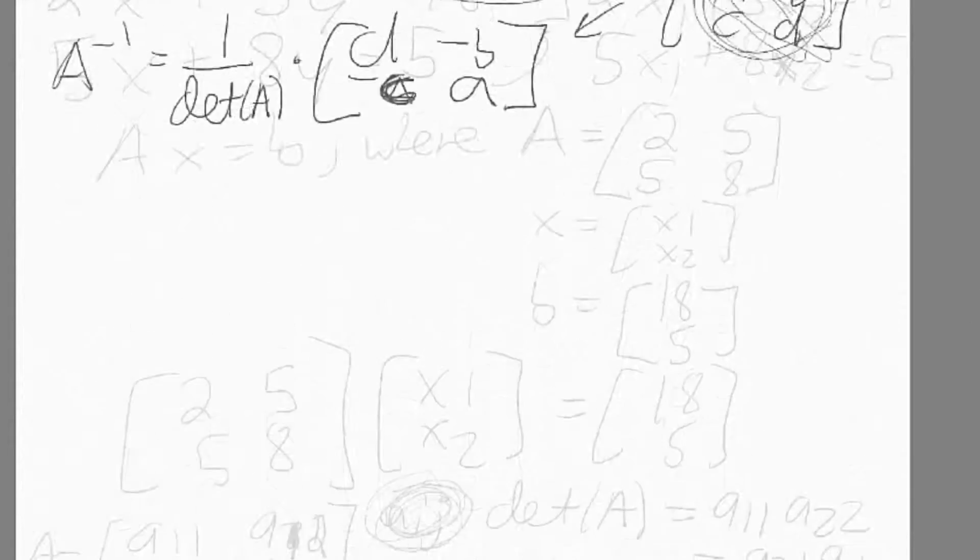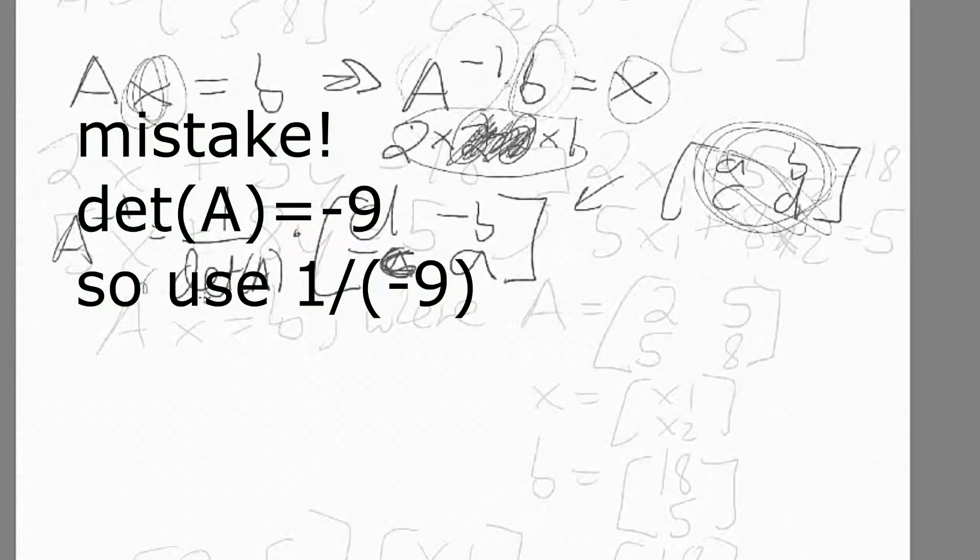We had a determinant earlier. We know that it was six. So in our problem, we had A equals 2, 5, 5, 8.